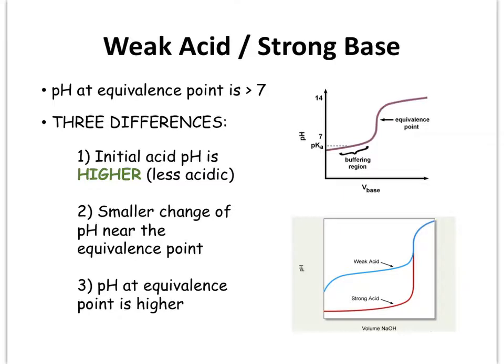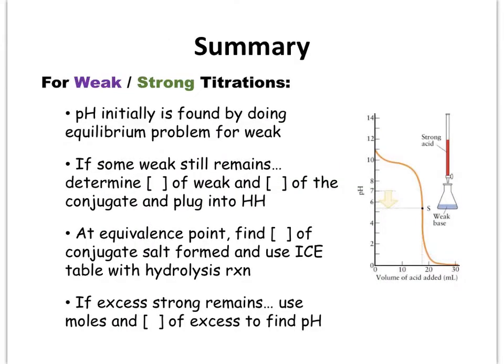You should be aware of these differences and understand why they actually take place. This is just a summary of how to find the pH along the different intervals for a weak-strong titration problem. If you're asked to calculate the pH initially, you're going to have to do an equilibrium problem with an ICE table because this is a weak acid or a weak base — they do not dissociate 100%. Any point after the initial up into the equivalence point is a buffering region because you have a weak acid or base and its conjugate present.